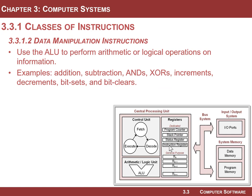The second class is a data manipulation instruction. This means you take information and process it using the ALU — adding two numbers, complementing values, shifting things. All the circuitry within the ALU to perform these various operations was built into the CPU. These instructions typically work on information that resides within CPU registers. Generally, if you want to manipulate data in data memory, you move it into a register, process it in the ALU — the output goes back to a register — and then you move it out to another location in memory. That's the second class.